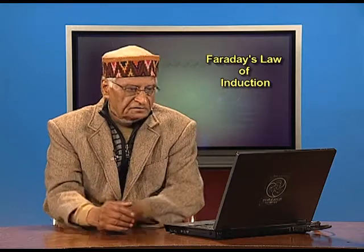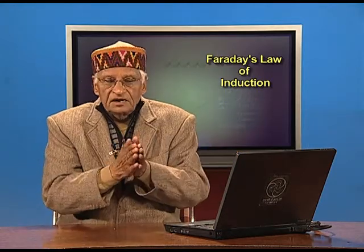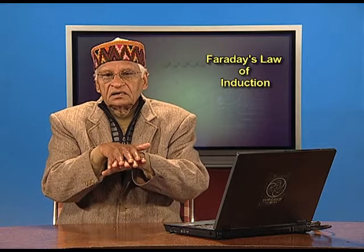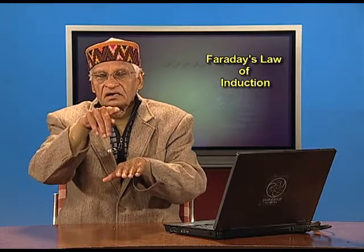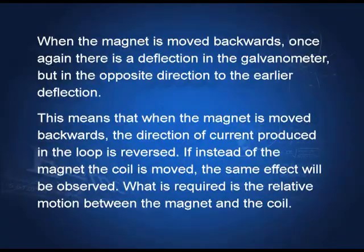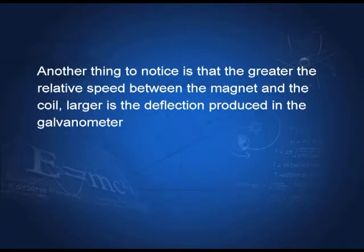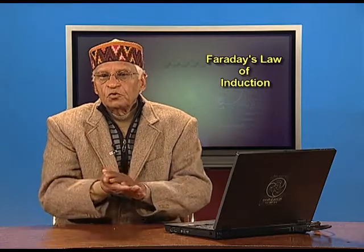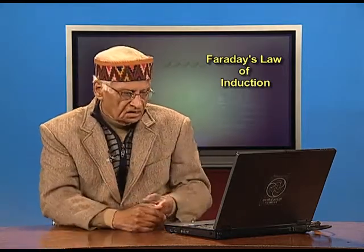The important thing to notice is that if the bar magnet is at rest and there is no relative motion between it and the loop, then there is no current. Current is established only when there is relative motion between the bar magnet and the coil. The bar magnet can move towards or away from the coil, or the coil can move towards or away from the bar magnet. Also, the faster we move the bar magnet or the coil, the larger is the current produced.